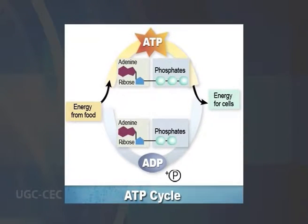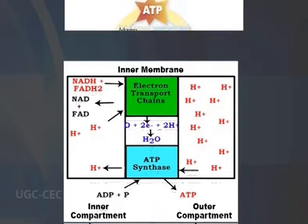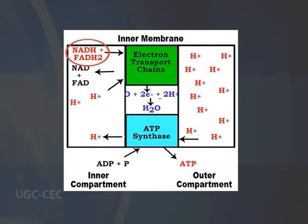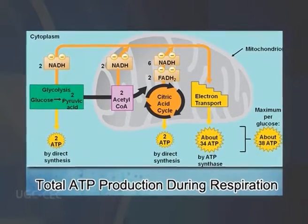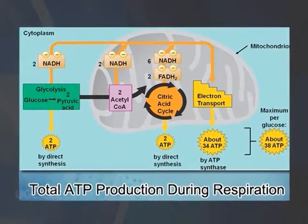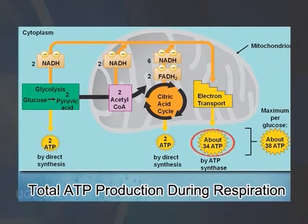The product of this process is energy in the form of ATP (adenosine triphosphate) by substrate level phosphorylation, NADH and FADH2. The reducing potential of NADH and FADH2 is converted to more ATP through an electron transport chain with oxygen as the terminal electron acceptor. Most of the ATP produced by aerobic cellular respiration is made by oxidative phosphorylation.